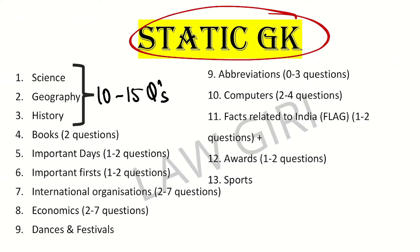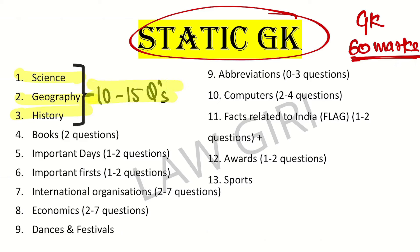GK plays a very important role here — you have 60 marks of current affairs and static GK combined. For static GK, science, geography, and history are very important, with 10 to 15 questions from these areas. Other important static GK topics include: books, important days, important firsts, international organizations, economics, dances and festivals, computers, facts related to India, awards, and sports.